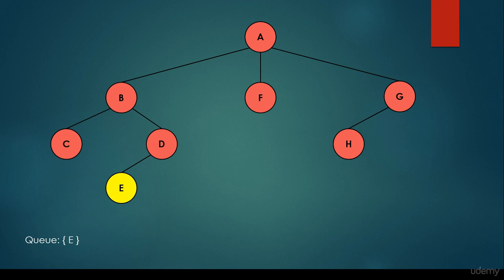We take out the next item from the queue — it is E — and we visit it. We find there are no more items in the queue, which means it is empty and we have finished. We were iterating while the queue was not empty; now that the queue is empty, we return from the breadth-first search method, having successfully visited all vertices in the graph.